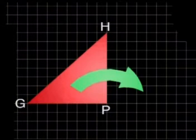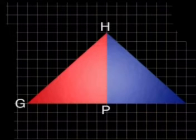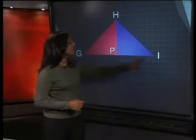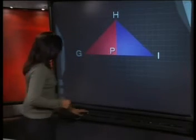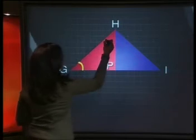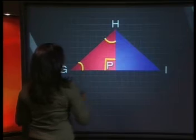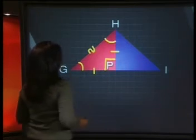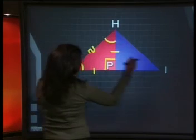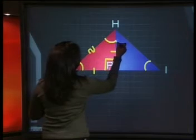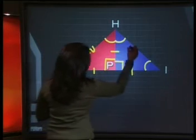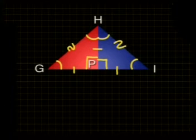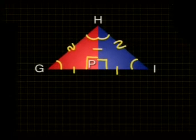Let's see what happens if we reflect triangle GHP using HP as the mirror line or line of symmetry. Let's call this new point I. Triangle IPH is an exact image of triangle GPH, and because they are exact images, these two triangles are congruent to each other. Let's mark this triangle with all the markings from before: the angle here is 90 degrees, the equal sides are marked, angle G equals angle I, and the angles at H and P correspond. Because we reflected triangle GHP, the image has all the same properties as the original.